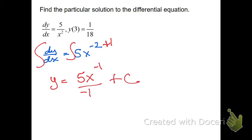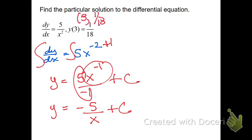Very important now. Now it really matters. Pretty it up a little bit. This will be a negative 5 and this will go back to the bottom over x. That's my general solution. Now find the particular solution. Plug in the point 3 comma 1 18th. So plugging in when x is 3.